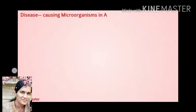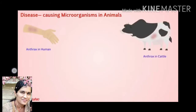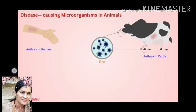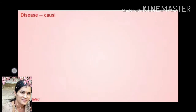Disease-causing microorganisms in animals. Several microorganisms cause disease not only in humans and plants but also in animals. Anthrax is a dangerous human and cattle disease caused by bacterium. Foot and mouth disease of cattle is caused by a virus and is avoided by vaccination.